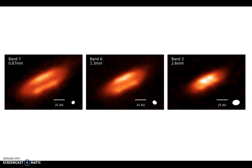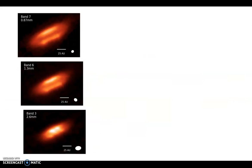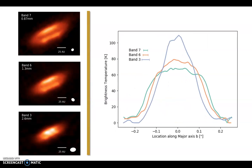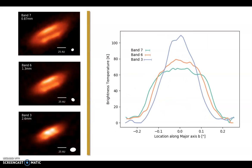The band 6 resolution is more comparable to band 7, and we can see that the dark lane remains obvious, until we reach band 3 where the optical depth is lower and the dark lane is not as prominent. For more direct comparisons, here's a plot of the brightness temperature along the major axis. Indeed,